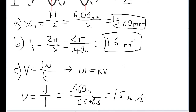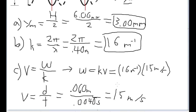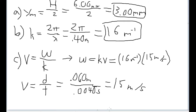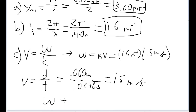Now that we have the wave speed, we can use it with the angular wave number from part B to get the angular frequency. Plugging into our formula: ω = k × v = 16 reciprocal meters multiplied by 15 meters per second. Multiplying these values gives an angular frequency of 2.4 × 10² radians per second.